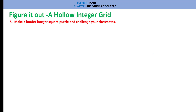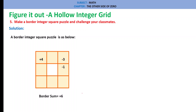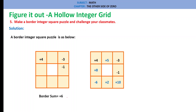Question 5: Make a border integer square puzzle and challenge your classmates. A border integer square with border sum 6 is shown. Solution — top row: plus 4, plus 5, minus 3 = plus 6. Bottom row: minus 6, plus 2, plus 10 = plus 6. Left column: plus 4, plus 8, minus 6 = plus 6. Right column: minus 3, minus 1, plus 10 = plus 6. Therefore, the border sum of plus 6 is achieved with this grid.